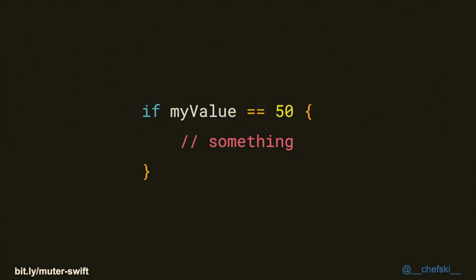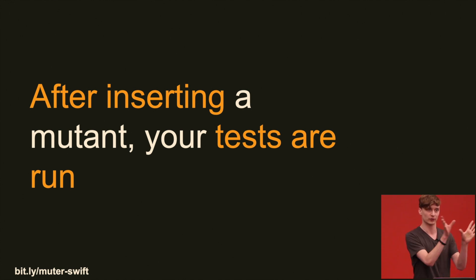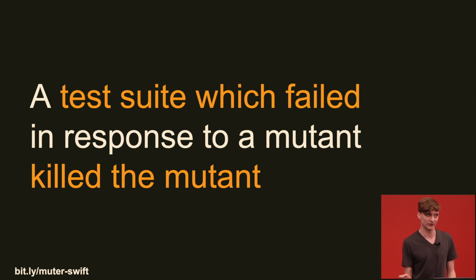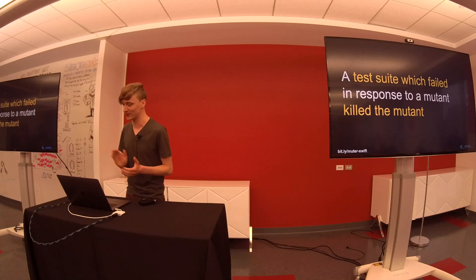The bugs that mutation testing introduces are validated by scientific research — they mimic realistic software errors. For example, one way it may change your source code introduces a change in an equality operator. So if you have an if statement that looks like this, after mutation testing it'll look like that. That if statement is not going to execute in the same way we would expect, and we would hope your test suite catches this issue. After a mutation test changes your source code, it's going to run your tests one change at a time. If your test suite fails — which is what we hope — we call this killing the mutant. We obviously want your test suite to kill the mutant.